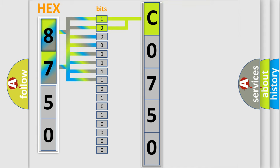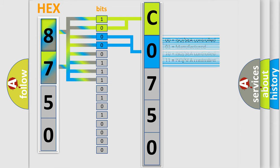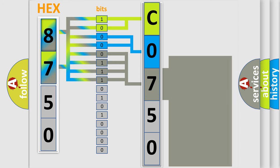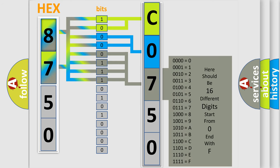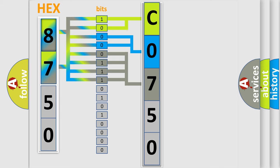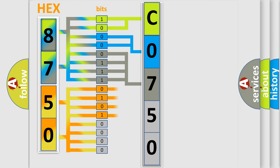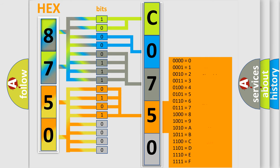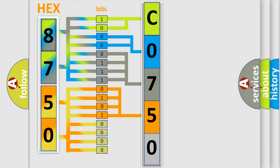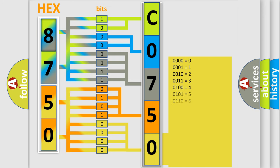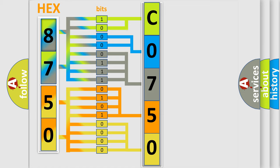The next two bits determine the second character. The last four bits of the first byte define the third character of the code. The second byte is composed of a combination of eight bits: the first four bits determine the fourth character of the code, and the combination of the last four bits defines the fifth character. A single byte conceals 256 possible combinations. We now know in what way the diagnostic tool translates the received information into a more comprehensible format.